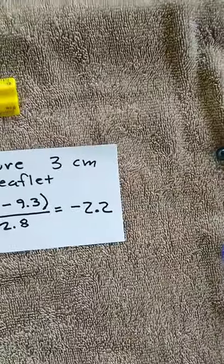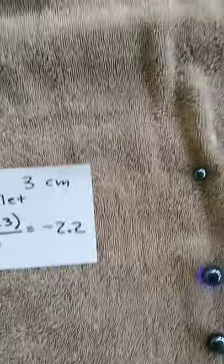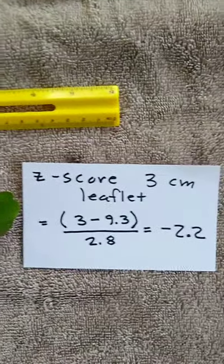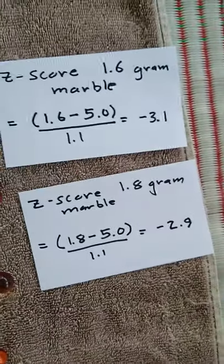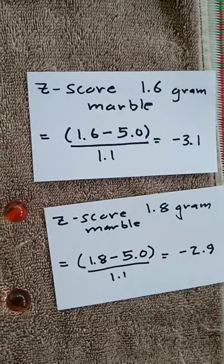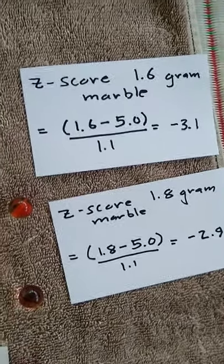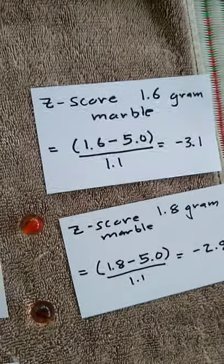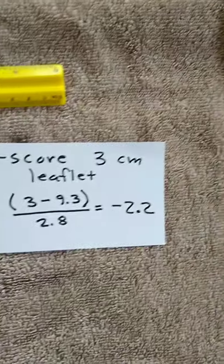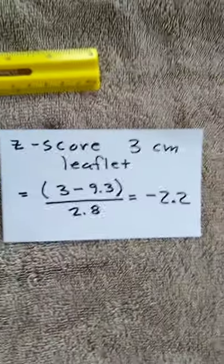So it turns out that the marbles are indeed more extreme than the leaves. The marbles have a more negative z-score. The z-score is farther away from zero. One is 3 standard deviations below the mean, and the other is just about 3 at negative 2.9. They are 3 standard deviations below the mean, while the leaflet is only 2.2 standard deviations below the mean. So those marbles are more extremely small than the leaflets. That's something we can do with z-scores.